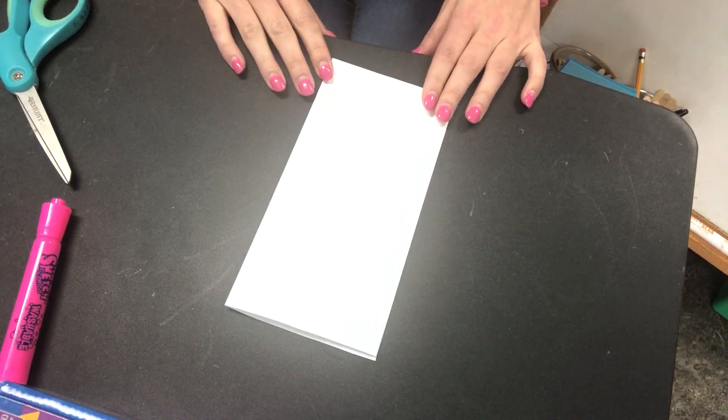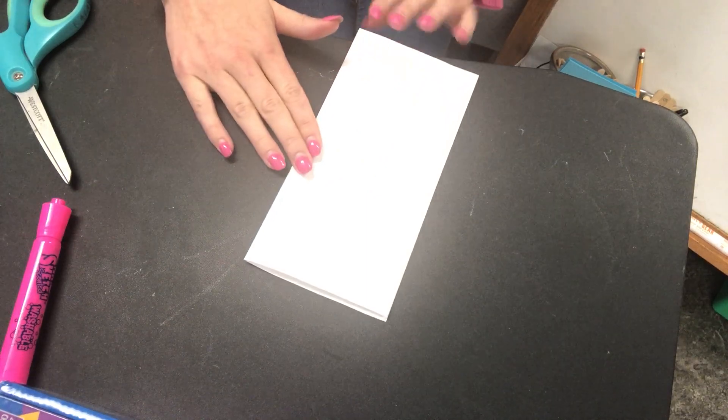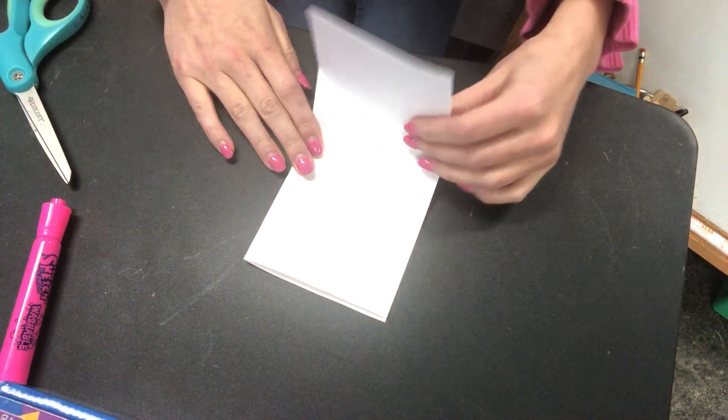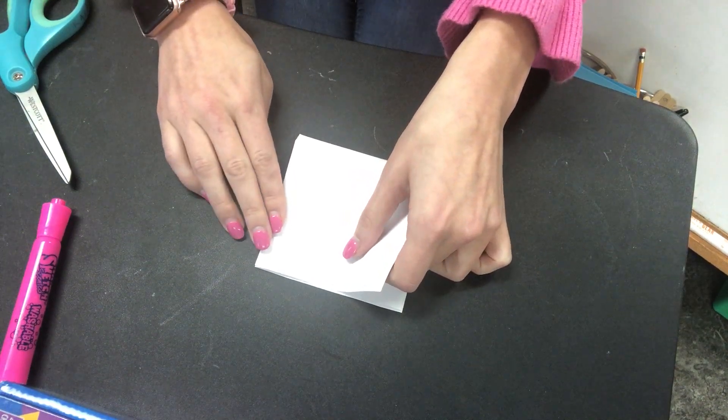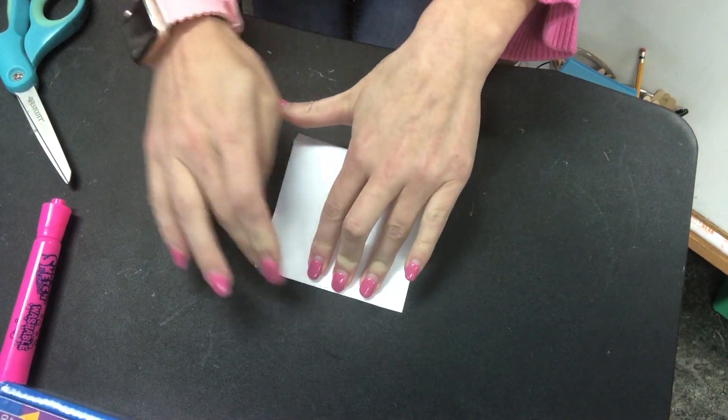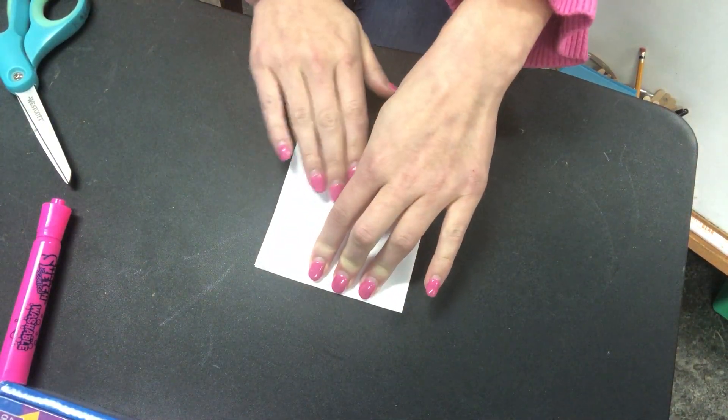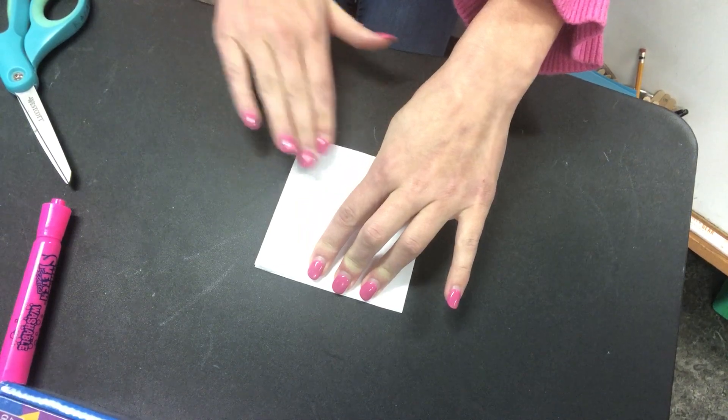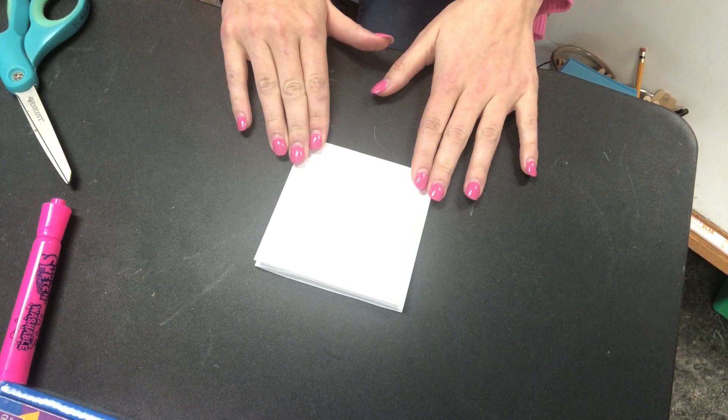Now we have a rectangle. Next we need to fold it into a square. So you're gonna take one end and match up the corners again. Use one hand once your corners do match up to hold it down and the other hand to squish it and make a crease on this side so it's nice and flat. Now we should have a square.